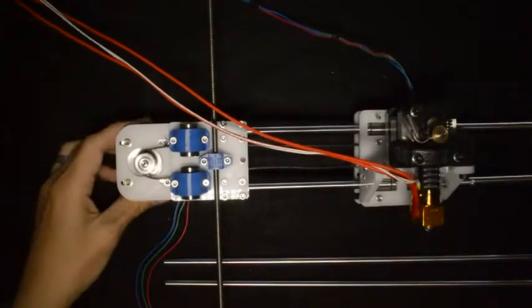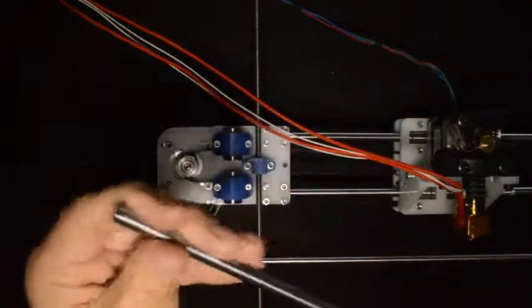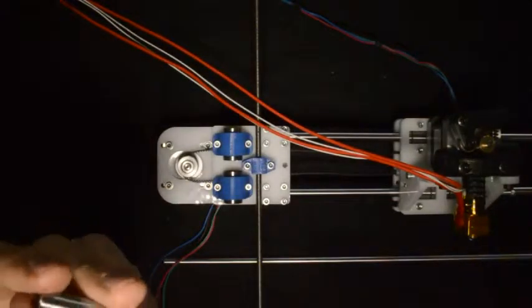When you are done with that, your assembly should look something like this. The final step is to insert the linear rods. Again, make sure your rods are clean and there are no sharp edges where you insert them.